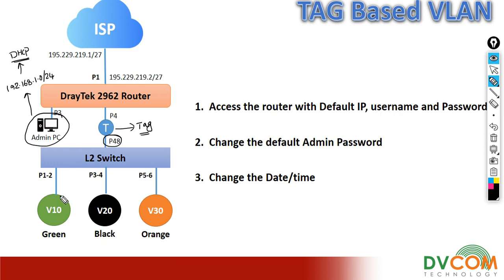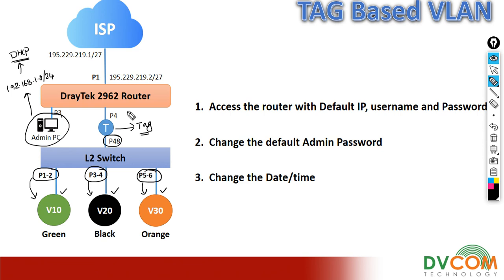In my Layer 2 switch I have configured three VLANs: VLAN number 10, VLAN number 20, and VLAN number 30. Port number 1 and 2 belong to VLAN number 10, port number 3 and 4 belong to VLAN number 20, and port number 5 and 6 belong to VLAN number 30. The DrayTek 2962 router is going to act as a gateway for VLAN number 10, 20, and 30.